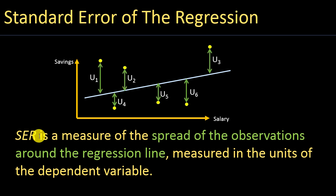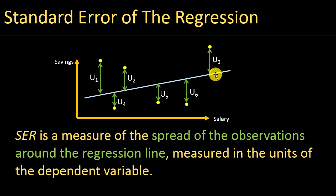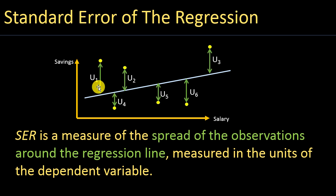If the standard error of the regression is quite small, that means your regression line is quite good at estimating your observations. But if your standard error of regression is quite high, that means the errors are quite large — in other words, the difference between what we are estimating and the actual observations is quite large.